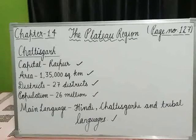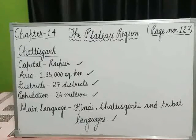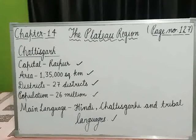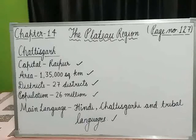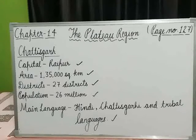The main crops of Chhattisgarh are rice and linseed. Linseed is used for making oil. Betel nut is also used, similar to how people use tobacco. Watermelon is also among the main crops grown in the state.